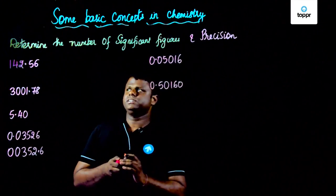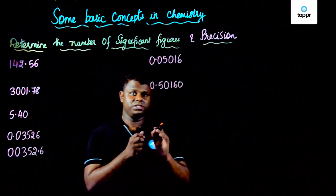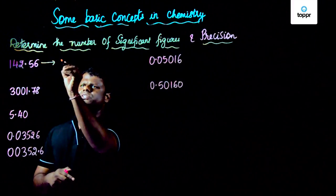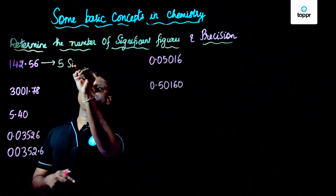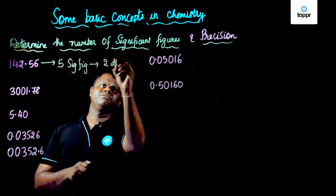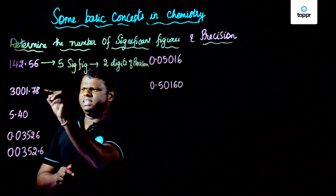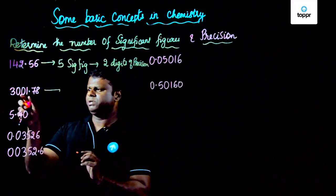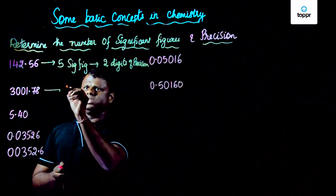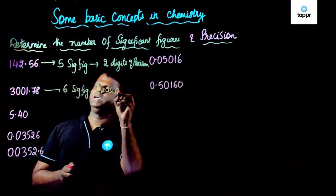Now let's do a small exercise based on significant figures: determine the number of significant figures and precision. As per the rules, these are all non-zero digits, so this has five significant figures, and after the decimal there are two digits — so it is two digits of precision. In the next case, you have zeros enclosed between two non-zero numbers, so counting 1, 2, 3, 4, 5, 6 — this has six significant figures and the precision is basically two.